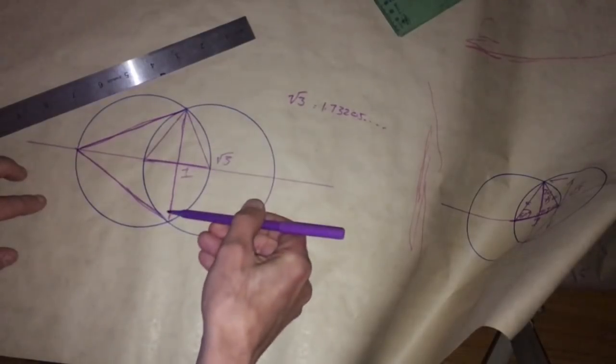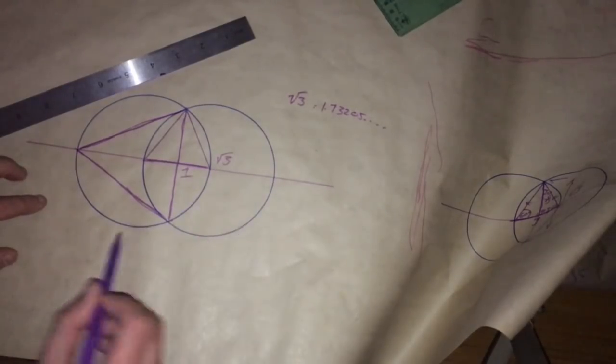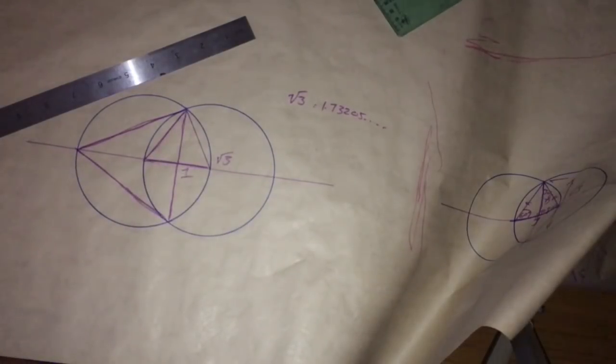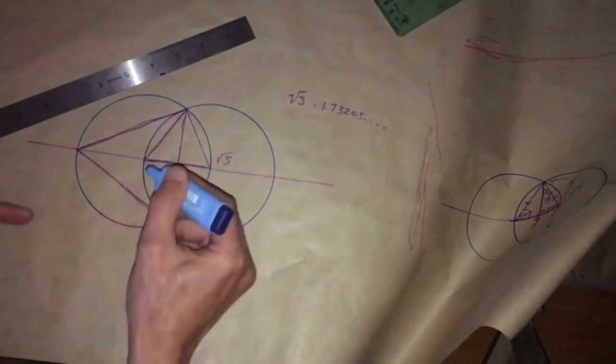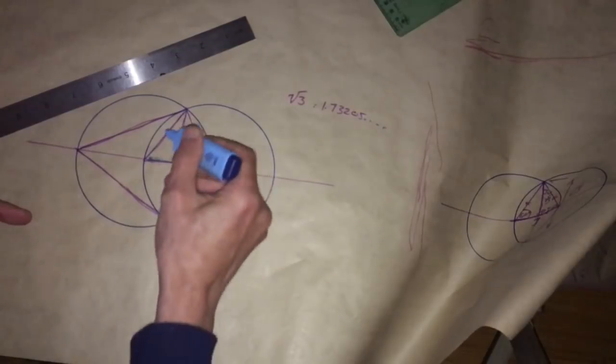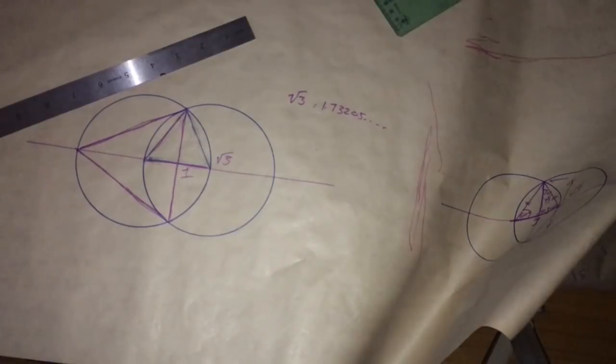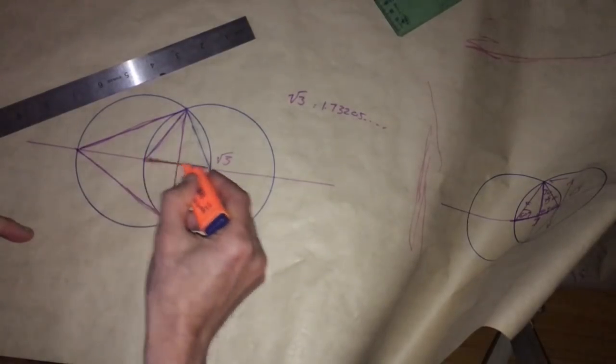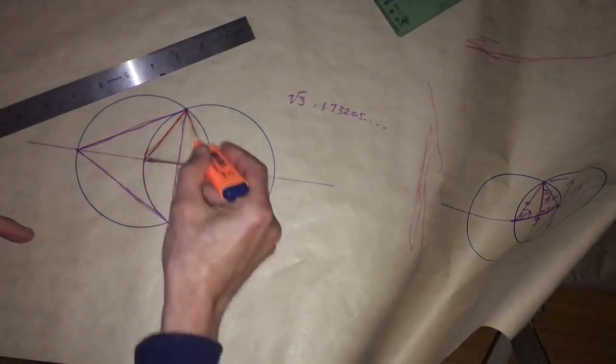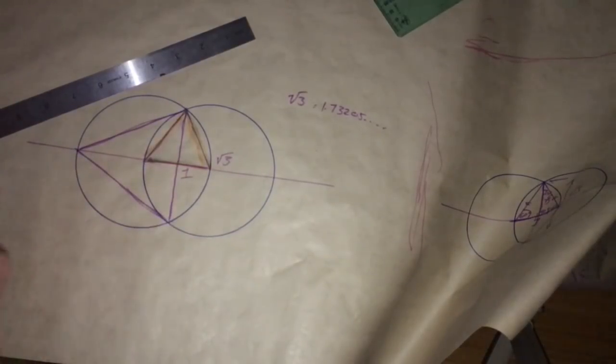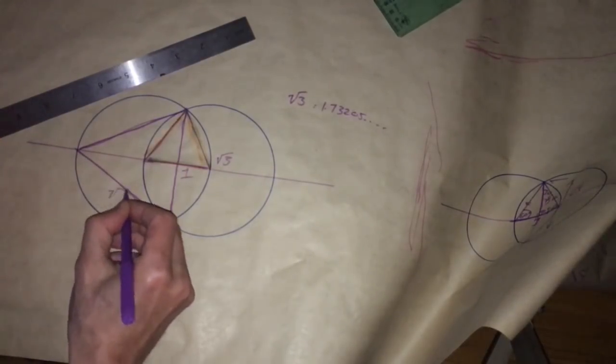Now, because we already know that edge length is the square root of 3, therefore we know that this equilateral triangle here, if that edge length is 1, if the smaller edge length is 1, now we have a larger equilateral triangle where the edge length is the square root of 3.